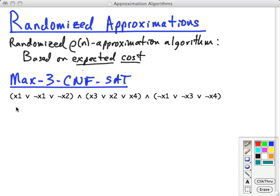3CNF-SAT is the question of does there exist an assignment of Boolean values to these variables that satisfies the formula. The maximization version is we relax the requirement that all of them be satisfied and we ask what assignment will satisfy the maximum number of them. This can be useful in applications where you're dealing with conflicting requirements.